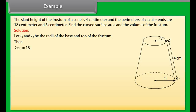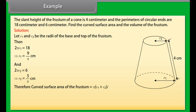If a right circular cone is cut by a plane parallel to its base, the portion between the cutting plane and the base of the cone is called the frustum of the cone. The formulas for the volume and surface area of the frustum of a cone are given and will be used in the next screen.